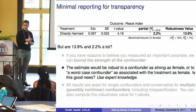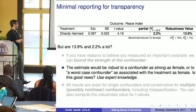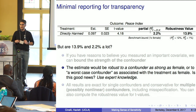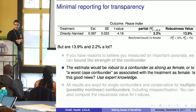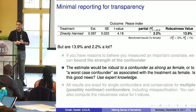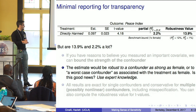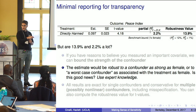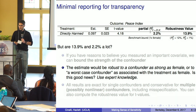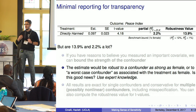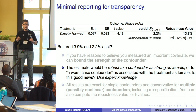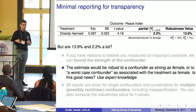Looking at the benchmark bound in the corner, our estimate would be robust to a confounder as strong as female. If we think the confounder is no stronger than female, it could at most explain 12% of the outcome and 1% of the treatment. The estimate is also robust to a worst-case confounder as associated with treatment as female — because female is only 1% and the partial R-squared is 2.2%. Whether this is good news, only experts can tell.